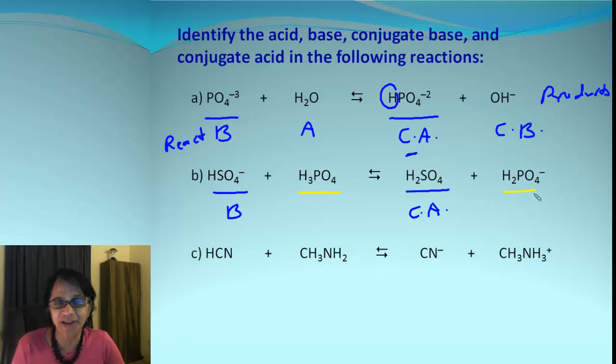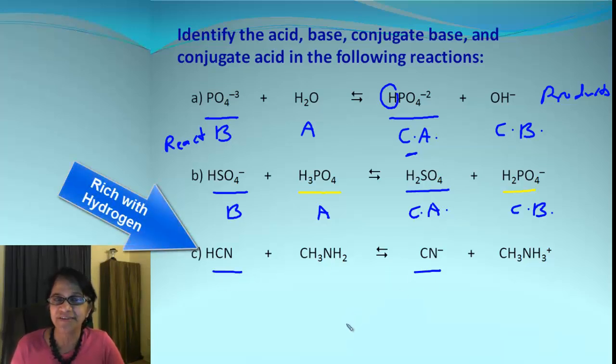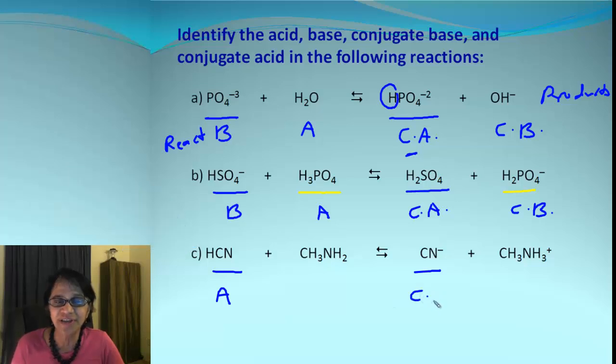When we look at these two pairs, there is extra hydrogen. That means that must be an acid. And that must be conjugate base. So it's simple. First find the two pairs and then find out which one is rich in hydrogen. Like this one, this is rich with hydrogen. That means that is acid. And this side must be conjugate base. And when that happens, you can actually predict this must be base. And that must be conjugate acid.